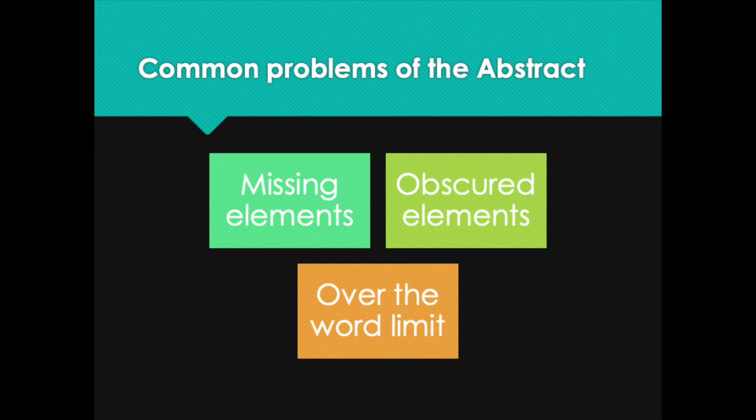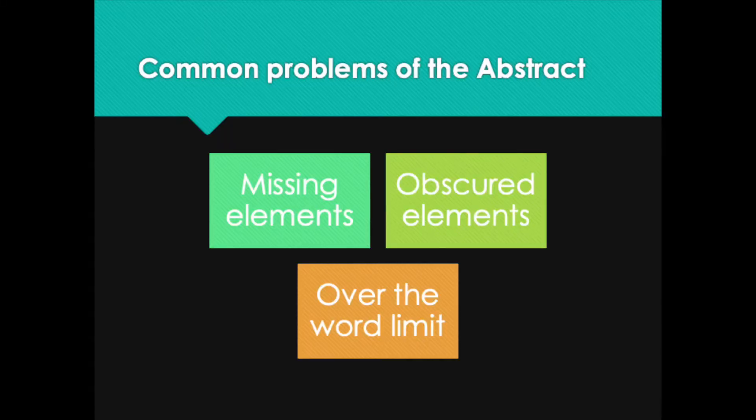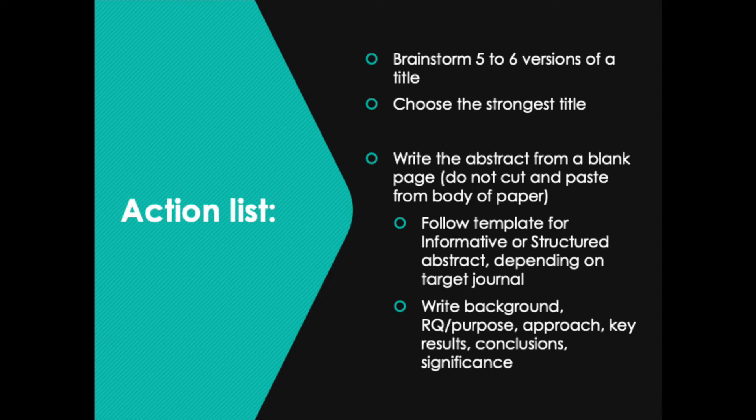Let's take a look at some common problems of the abstract. One is missing elements — make sure you have all of the required elements: the background, the knowledge gap, the research question or purpose, the approach, the results, the conclusions, and the significance. It's a lot to fit into a small space. Another common mistake is having those elements present but not signposted clearly, making them obscured. A third common problem is going over the word limit. You won't be able to submit your paper to the journal until the abstract is under the word limit, because electronic submission portals simply won't accept it if it's over — so make sure you spend time getting it within the word limit before you begin the submission process.